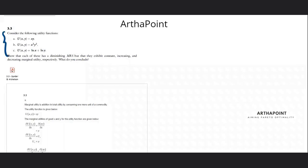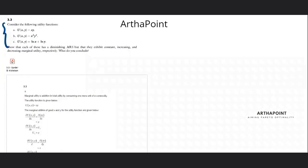This is question number three from Snyder and Nicholson. Let's look into the question. You're given a utility function and it says show that each of these has a diminishing MRS, but that they exhibit constant, increasing, or decreasing marginal utility respectively. What do you conclude?